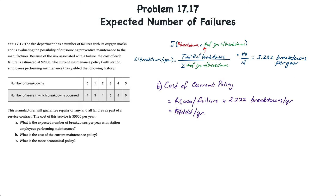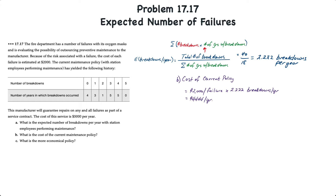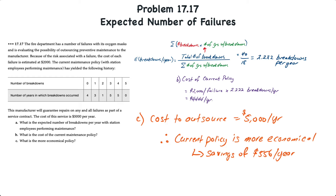For requirement C, to determine which is most economical: the cost to outsource is $5,000 per year, while the estimated cost of in-house maintenance is $4,444 — a savings of $556 per year by keeping maintenance in-house. Therefore, the current policy is more economical than the outsourced option.